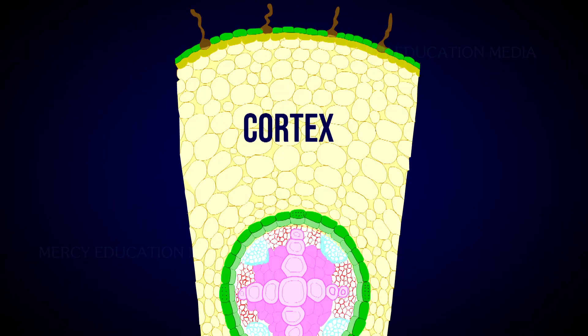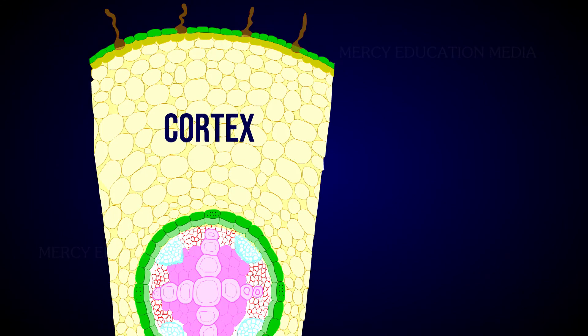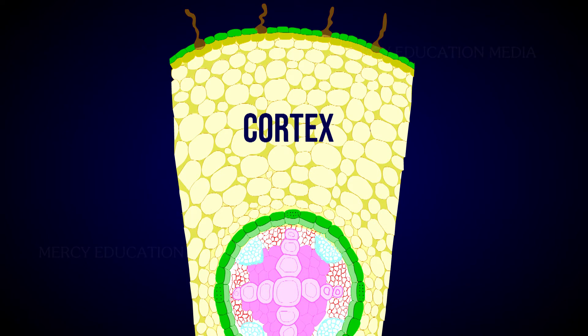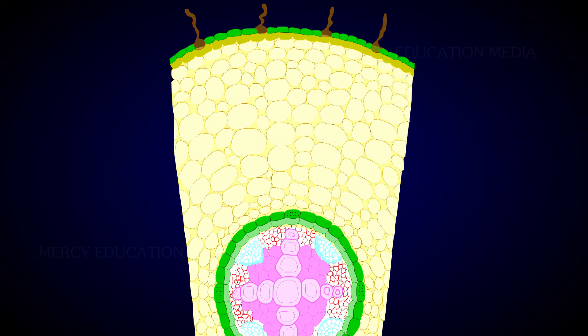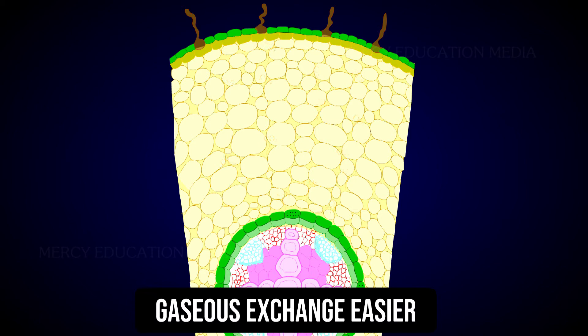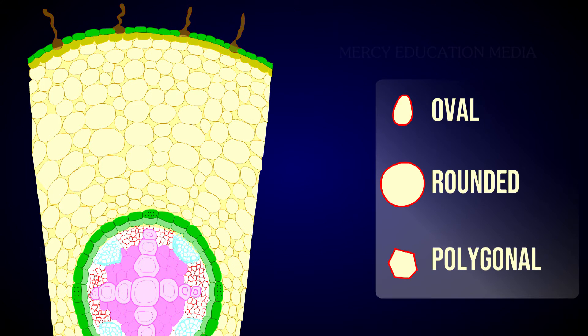The cortex region consists of only parenchyma cells. These cells are loosely arranged with intercellular spaces to make gaseous exchange easier. These cells may store food reserves. The cells are oval or rounded in shape, and sometimes they are polygonal due to mutual pressure.